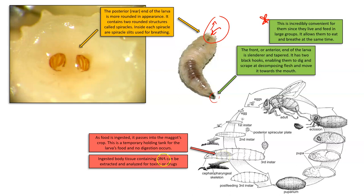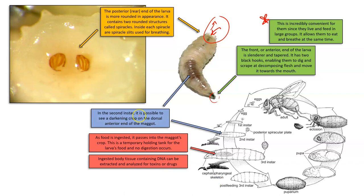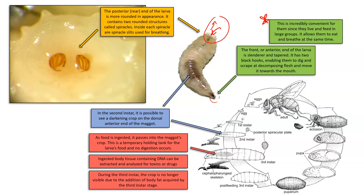In the second instar larva, it is possible to see the crop — the location where all digested material is kept temporarily before digesting. In the third instar, the crop is no longer visible due to the addition of body fat acquired by that stage. They are substantially bigger, so the crop is actually deeper inside the larva than it was in the second instar.